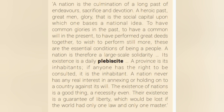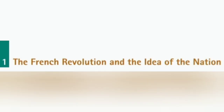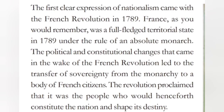Section 1: The French Revolution and the Idea of the Nation. The first clear expression of nationalism came with the French Revolution in 1789. France was a full-fledged territorial state in 1789 under the rule of an absolute monarch. The political and constitutional changes that came in the wake of the French Revolution led to the transfer of sovereignty from the monarchy to a body of French citizens. The revolution proclaimed that it was the people who would henceforth constitute the nation and shape its destiny.